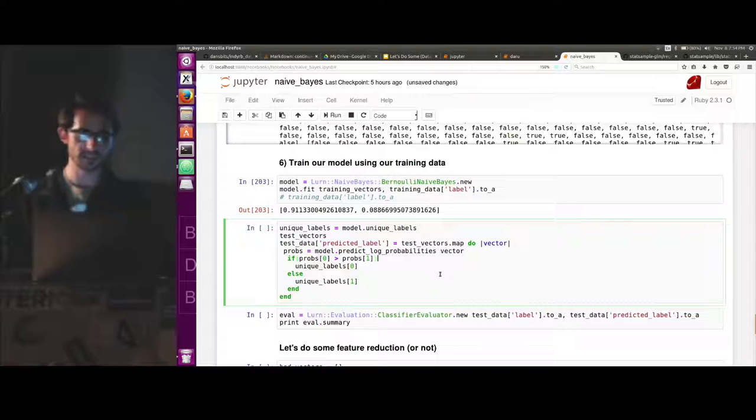So now we evaluate it, we take our test data, we loop through each one and call predict log probabilities or predict probabilities on our model passing in that vector. And it's going to give us, it doesn't say this is a waterfall painting or not. It gives you a probability that it's a waterfall painting.